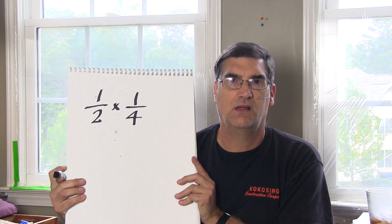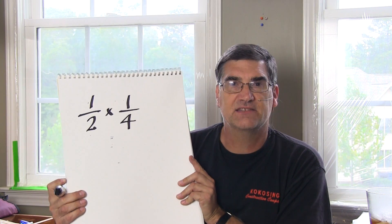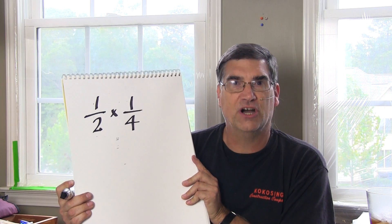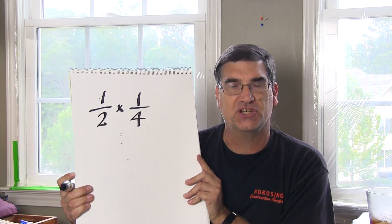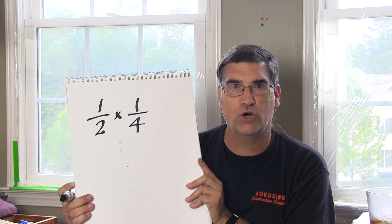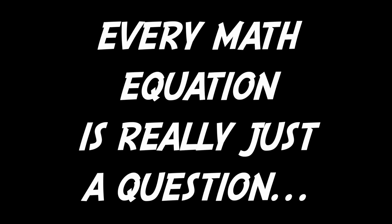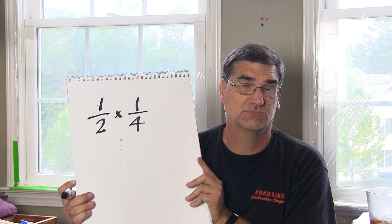Let's multiply one half times one quarter. Then what that's really saying is, what is one quarter of one half? That question right there that's being asked is, how much is one quarter of one half? Well, you simply multiply and you get one eighth.